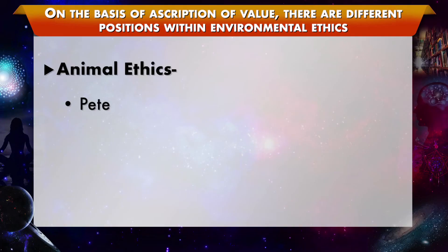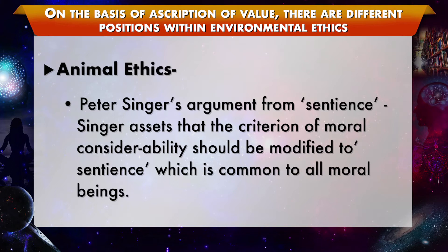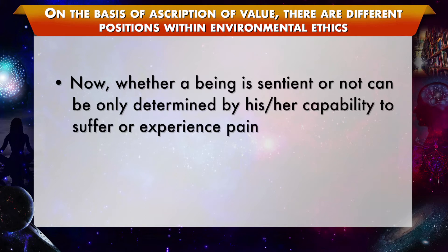Now let's talk about animal ethics as explained by Peter Singer's argument from sanctions. Peter Singer's most significant contribution in the domain of environmental ethics can be defined in terms of his argument from sanctions. Unlike most ethicists, Singer does not consent to holding rationality as the basic criterion for moral consideration, as there are a lot of human beings who also don't qualify for this criterion. Thus, Singer assessed that the criterion for moral considerability should be modified to sentience, which is common to all moral beings. Whether a being is sentient can only be determined by its capability to suffer or experience pain.